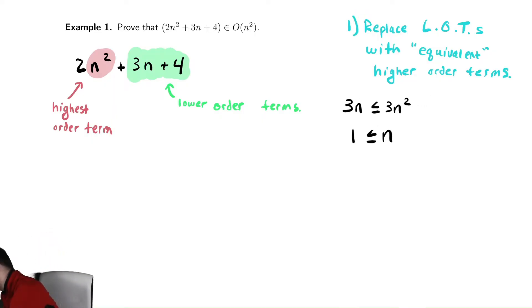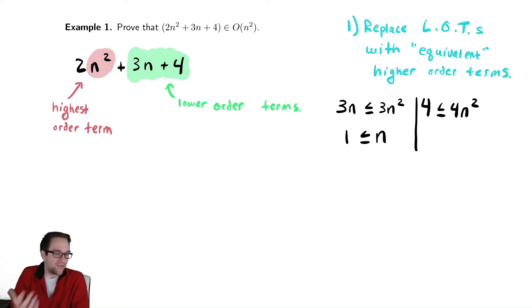Our second fact we are going to observe is that 4 is less than or equal to 4n². Hopefully you look at that and go, well, yeah, of course it is. One's a number and one goes to infinity as n goes to infinity. So clearly, eventually, that's true. Well, when is eventually?